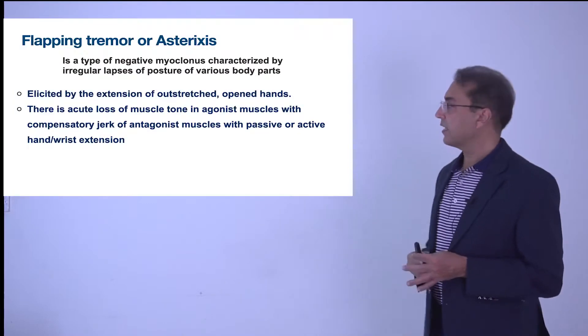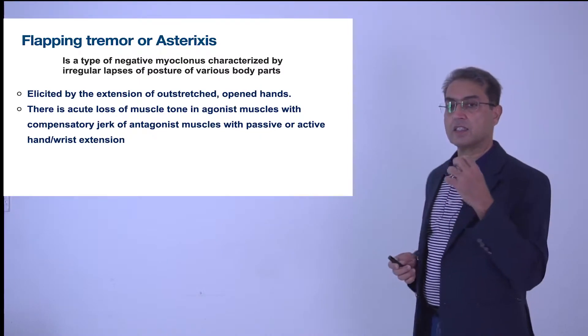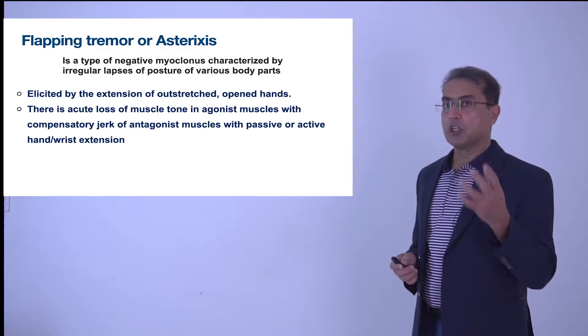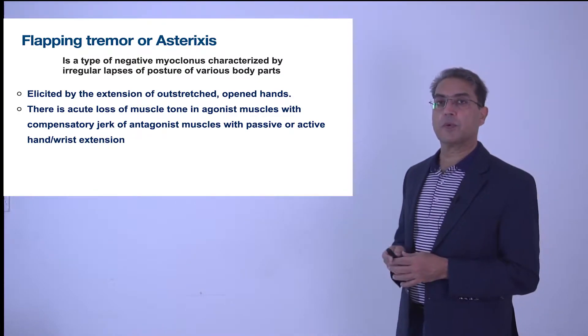There is actually a loss of tone of the agonist muscles and a resulting compensatory jerk of the antagonist muscles. So this results in this tremor.